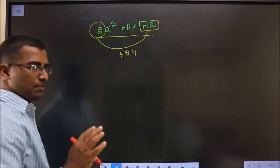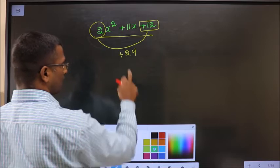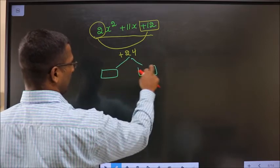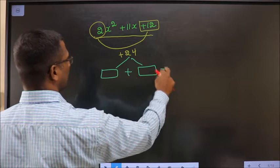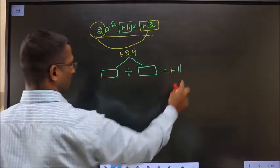Next, you should look out for 2 numbers such that when you add, you should get the middle number which is plus 11.